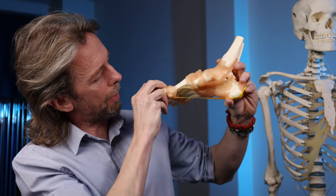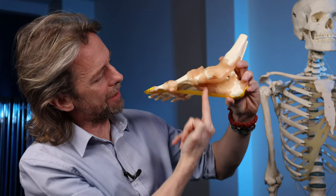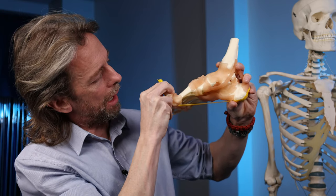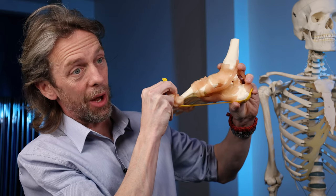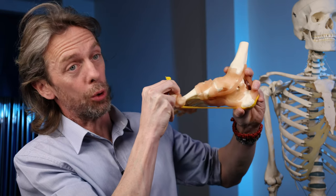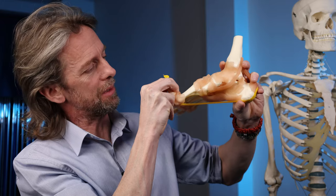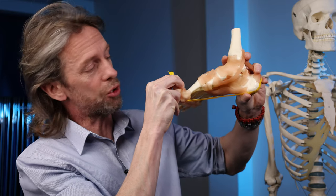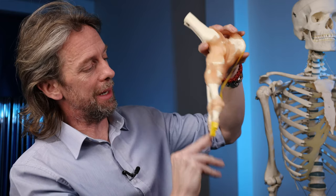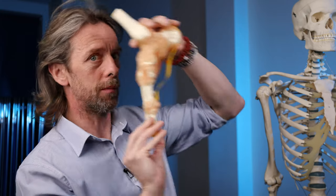And as you dorsiflex your toe, that tension in the plantar aponeurosis helps raise up this arch. And that arch itself and the structures that form the arch and hold it all together—all those ligaments and muscles and tendons and bits and bobs—are also then storing energy which can be released when you push off.